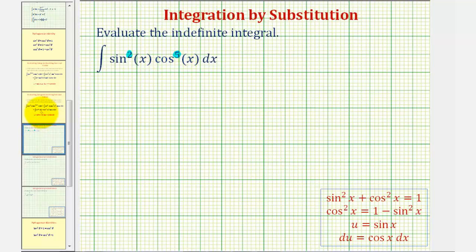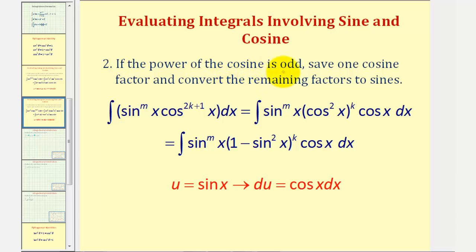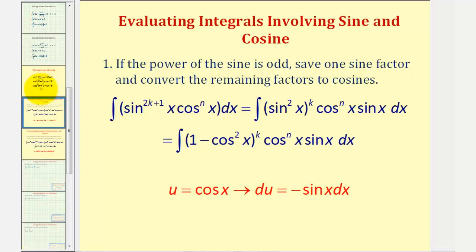To review from a previous lesson: if the power of the cosine is odd, we save one cosine factor and convert the remaining factors to sines. The reason is we let u equal sine x, so differential u equals cosine x dx — that saved cosine factor becomes du. Similarly, if the power of the sine is odd, we save one sine factor and convert the remaining factors to cosines.